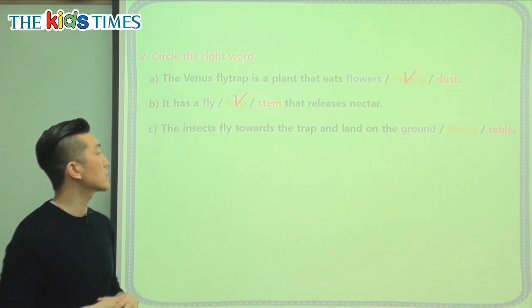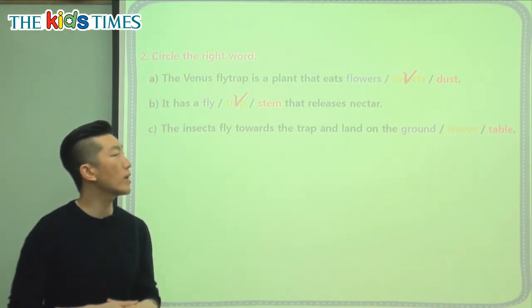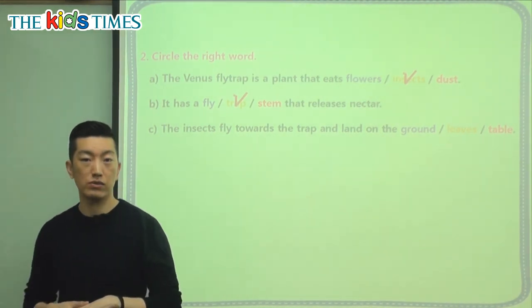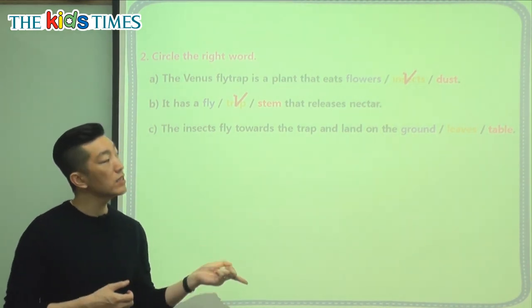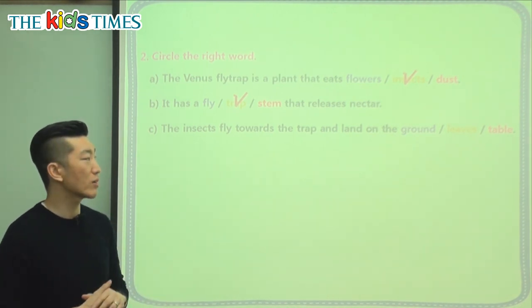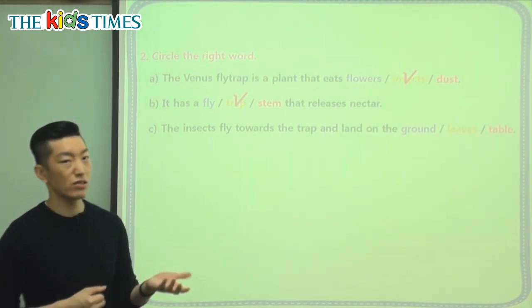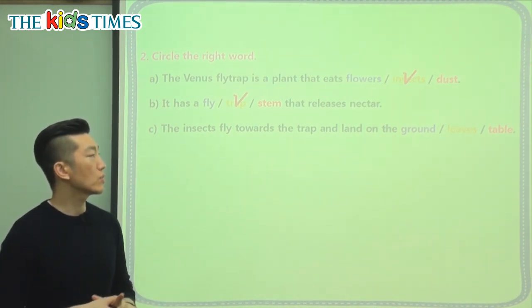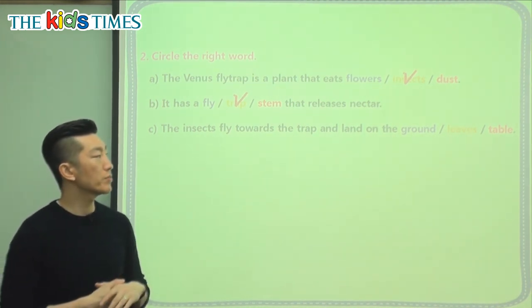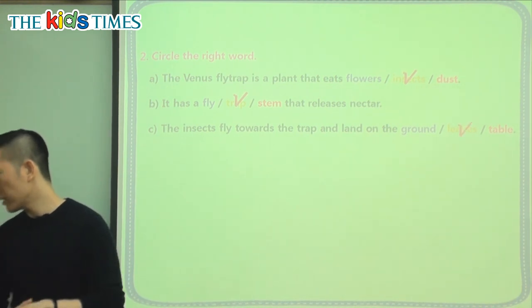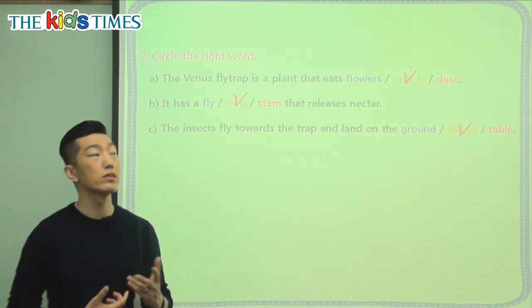The last question: the insects fly toward the trap and land on the ground, on the leaves, or on the table? A table is not part of a plant, and landing on the ground means it would not get any food. The correct answer is: land on the leaves.